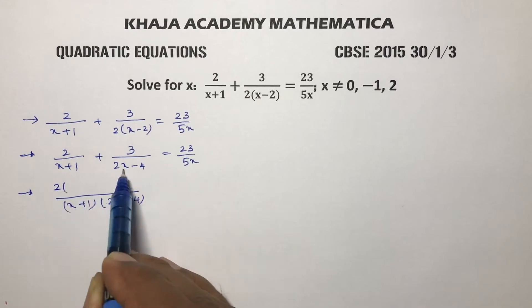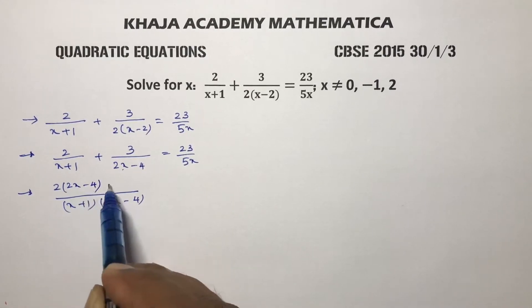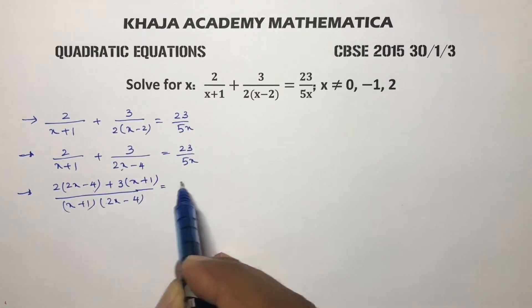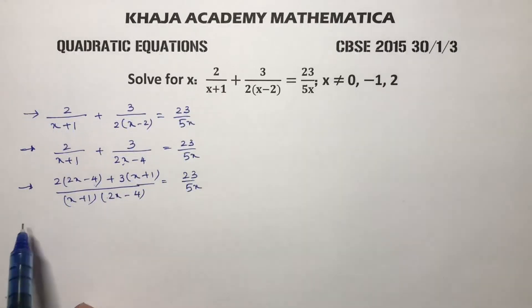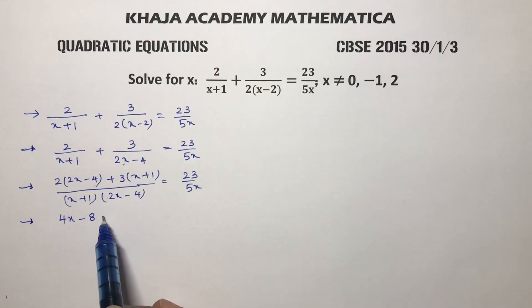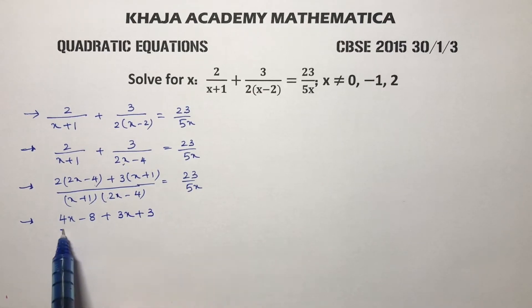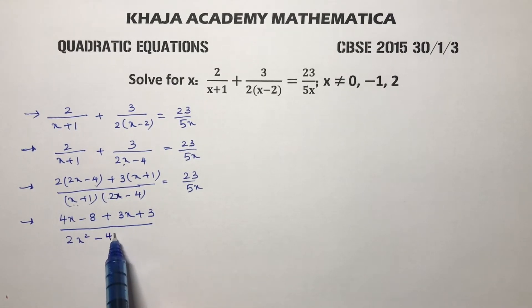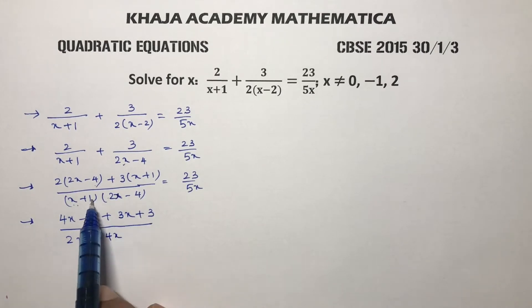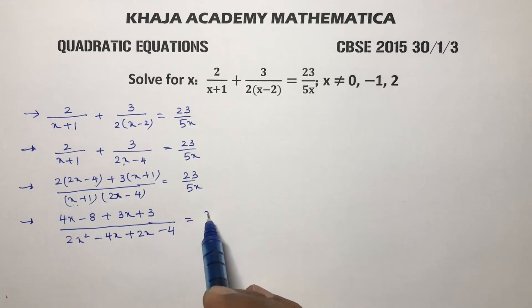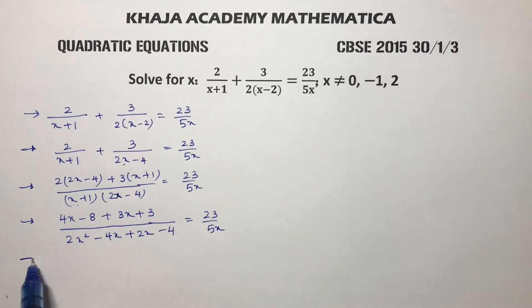So here, we have (x+1), multiply with (2x-4), and here 3, we have (2x-4), so multiply with (x+1), equals 23/(5x). Simplify now: 2 times (2x-4) gives 4x minus 8, plus 3 times (x+1) gives 3x plus 3. On the right side: x times 2x is 2x squared, x times minus 4 is minus 4x, and 1 times 2x is plus 2x, 1 times minus 4 is minus 4.